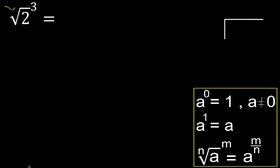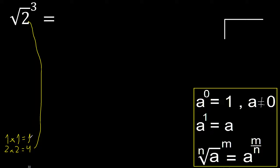There is no number, therefore it is 2. The numbers that multiply to equal 2: 1 times 1 is 1, not 2; 2 times 2 is 4, not 2.